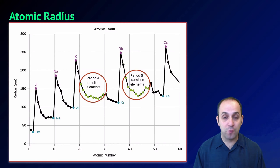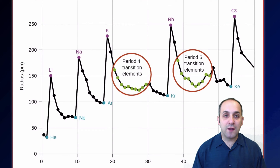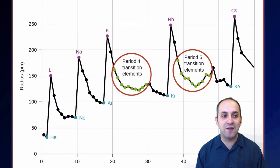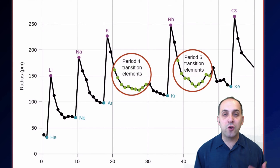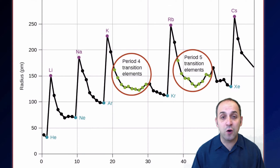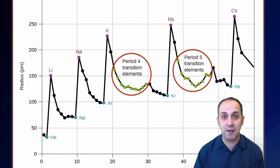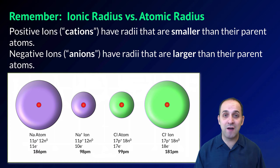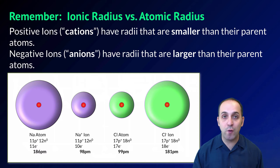Here atomic radius is graphed out for many elements on the periodic table. You can see that the group 1 elements are at the top, and going down that group from lithium to cesium the atomic radius increases. Similarly, within a period starting with the group 1 element down to the noble gas, the trend is for atomic radius to decrease. There are definitely some exceptions, but we're not focused on those right now. Also remember that ionic radius differs from atomic radius: positive ions, or cations, have radii smaller than their parent atoms, while negative ions, or anions, have radii larger than their parent atoms.